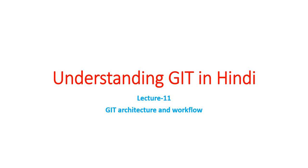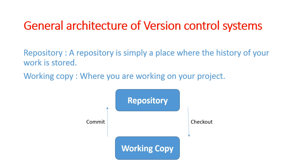GIT को समझने की सीरीज में आपका स्वागत है। यह lecture 11 है, जिसमें हम समझेंगे कि GIT का architecture कैसा होता है और उसके workflow को भी समझेंगे। इस slide में हम general architecture of version control system discuss करेंगे। उसके लिए दो terminologies आपको clear होना चाहिए - पहली कि repository क्या होता है और दूसरा कि working copy क्या होता है।